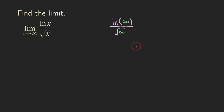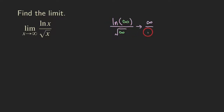So ln of infinity — if you look at the graph for the ln function, as x approaches infinity the function is getting higher and higher in the y direction, so it's approaching infinity. The bottom is a square root function, which has a similar shape. So the square root of x is also approaching infinity when x approaches infinity. So we get the indeterminate form ∞/∞.